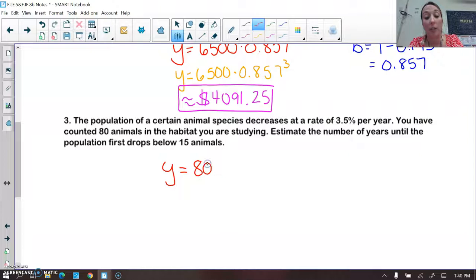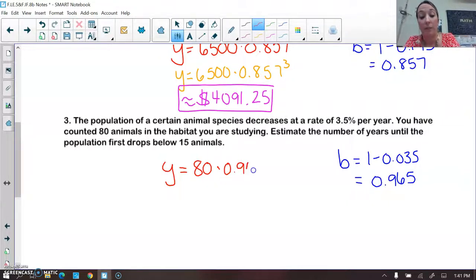You start off with 80 animals. Times. Now my decay, my b value, my decay rate, is 1 minus my percent expressed as a decimal. Which is this. So it's 0.965. And that would be raised to the x power.